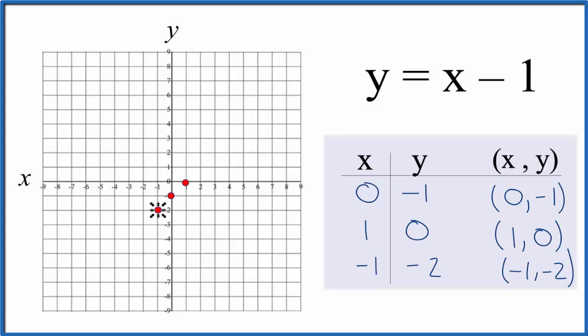And finally we have this negative 1 for x and negative 2 for y. So you can see they all line up. And if we use two points it would work, but with 3 you can make sure you didn't make any mistakes. Let's put a line through this, and then we can put arrows on either side here to show it goes to infinity. So this is the graph for y equals x minus 1.